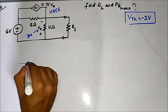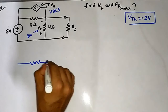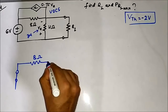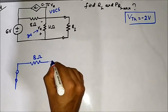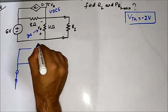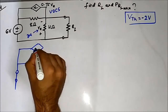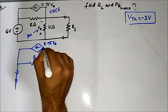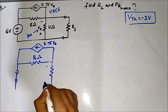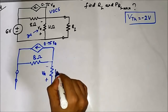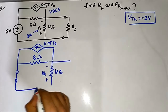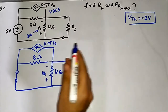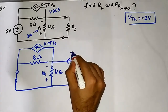Now we have to determine the Thevenin resistance, so we redraw the circuit with the independent voltage source short-circuited. The circuit has an 8 ohm resistor, the short circuit in place of the load, a 4 ohm resistor, and the dependent source 0.75 Va. We connect an external excitation of 1 volt and find the resulting current I.